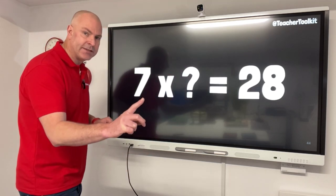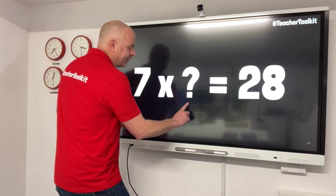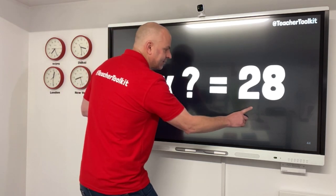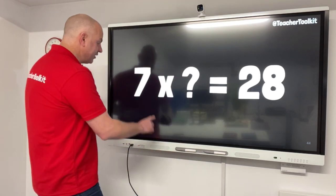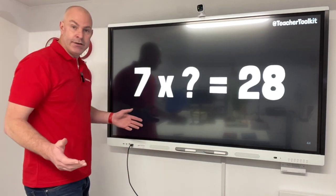Here are two examples here. What's the difference? 7 times something equals 28. That's version 1. Version 2, 7 times something equals 28. What's the difference?